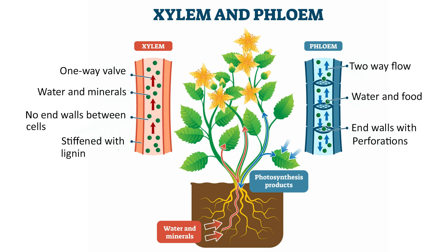Xylem and phloem form the vascular system of plants, enabling the efficient transport of water, minerals, and nutrients necessary for growth, metabolism, and survival. This vascular system also provides structural support to the plant, allowing it to stand upright and grow tall.